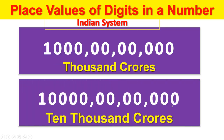Ones, tens, hundreds, thousands. Crores. 10 crores, 100 crores, 1000 crores, 10,000 crores.